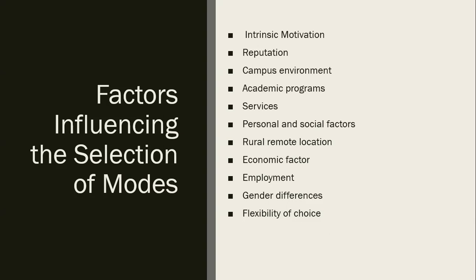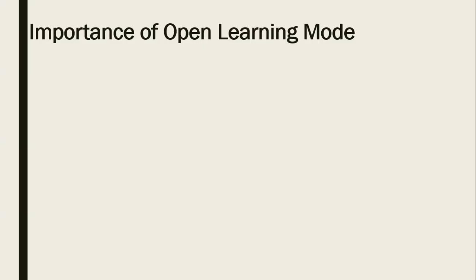Flexibility of choice भी बहुत matter करती है — आप जहाँ जाना चाहते हैं वहाँ admission मिले या नहीं। Time constraints भी देखे जाते हैं कि degree किस university में कितने सालों में complete होगी। Distance mode में interaction न होने की वज़ह से काम pending रहता है और time period longer हो जाता है, जबकि formal mode में एक flow में सब होता है और degree समय पर मिलती है।